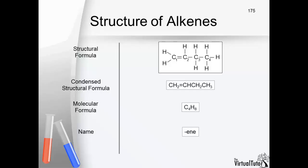If we number the chain from left to right, the double bond is between carbon atom 1 and carbon atom 2. These are the lowest possible numbers for both atoms and the numbering is now correct.